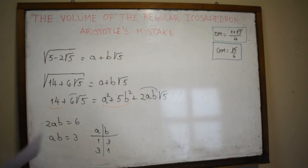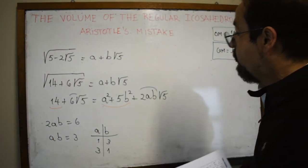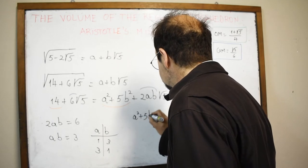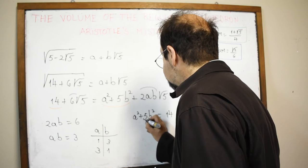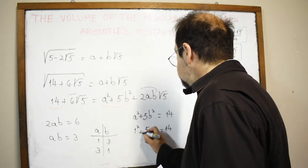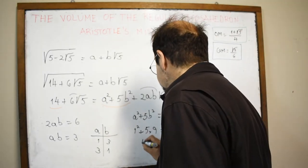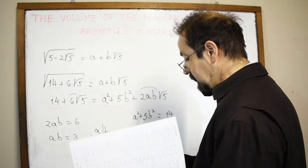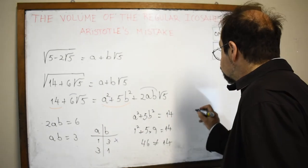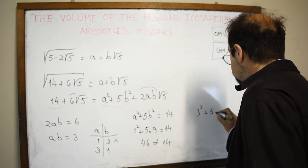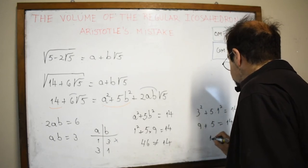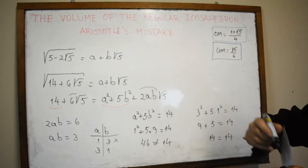Negative values don't make sense since this must be positive. Trying the first case: 1² + 5(3²) = 1 + 45 = 46, which is not equal to 14, so that doesn't work. Trying the second case: 3² + 5(1²) = 9 + 5 = 14. Yes, fourteen equals fourteen!